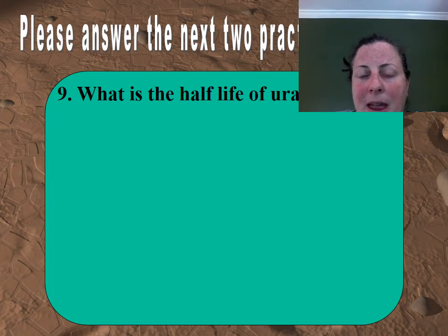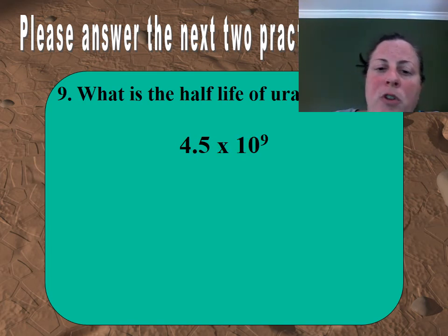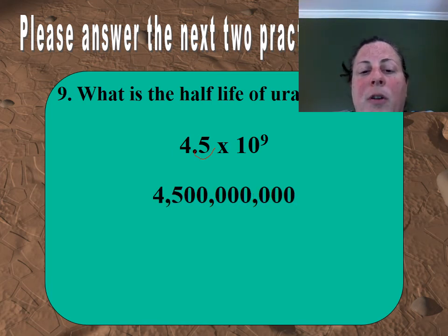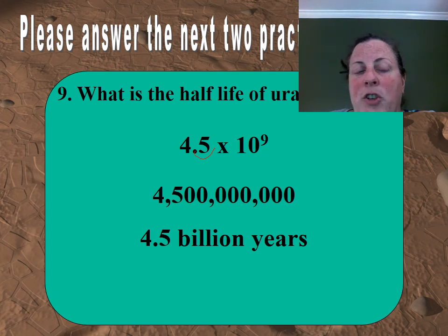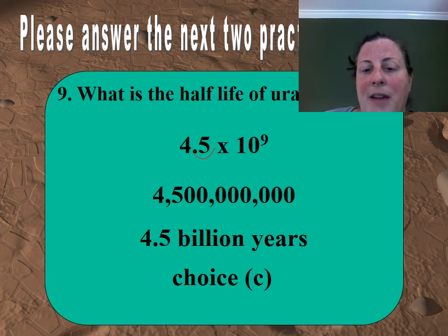Looking at your reference table, the half-life of uranium-238 is 4.5 times 10 to the 9 years. So if you move your decimal over nine places — adding eight zeros — you get 4,500,000,000 years, which is 4.5 billion years. This happens to be about the age of the Earth. So when we find uranium-238 in a rock, this is something that is useful for things that are really, really old — almost as old as the Earth.